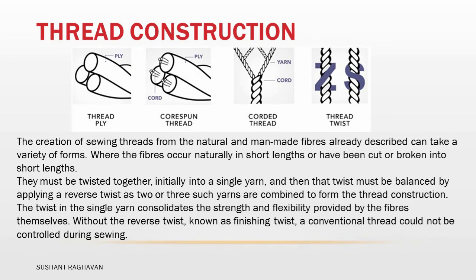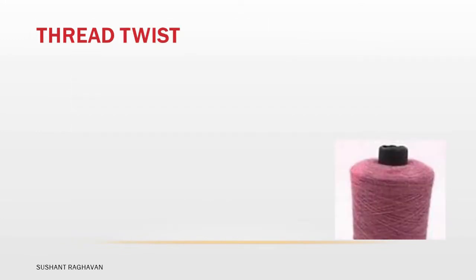The twist in the single yarn consolidates the strength and flexibility provided by the fibers themselves. Without the reverse twist, known as finishing twist, a conventional thread could not be controlled during sewing.